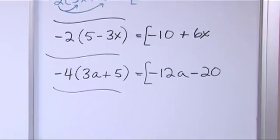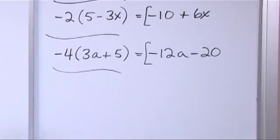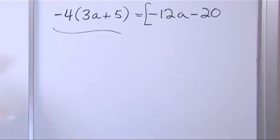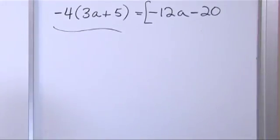What if you have negative 4 on the outside of (3a plus 5)? Distribute the negative four in: negative four times 3a is negative 12a — multiply the numbers, the variable comes along. Negative four times five is negative twenty. So the answer is negative 12a minus 20.